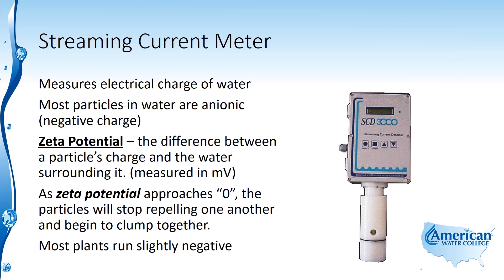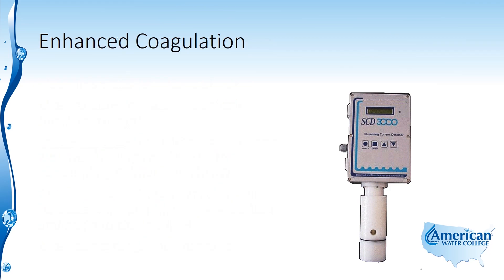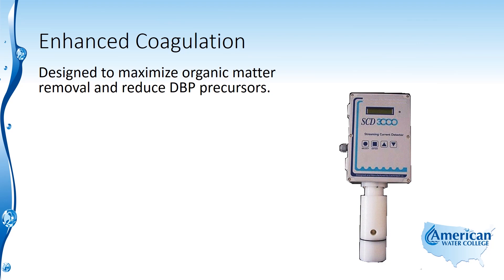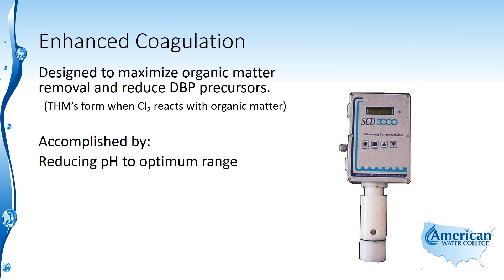Most plants run slightly negative, and that's because you don't want to overdose your coagulant, because that can cause water quality issues in the distribution system. Another way to operate the coagulation process is what's called enhanced coagulation, and that's designed to maximize organic matter removal and to reduce disinfection byproduct precursors — specifically trihalomethanes — because trihalomethanes form when chlorine reacts with organic matter in the water.